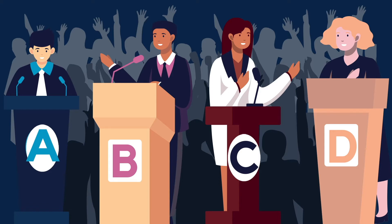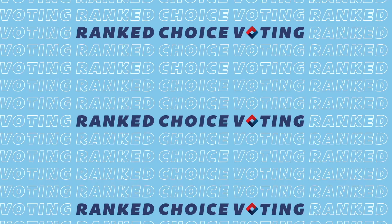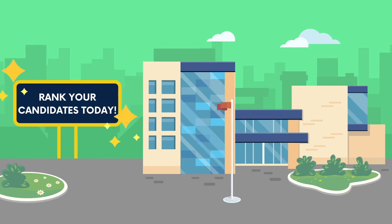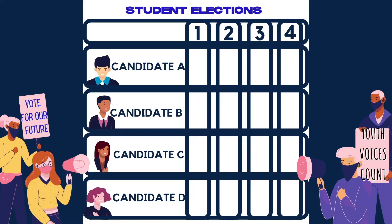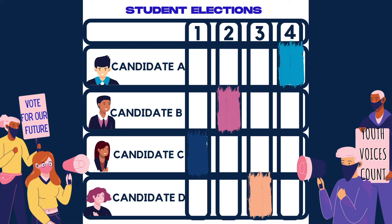All four of them make good points and promises for what you want, and your school is using ranked choice voting to allow you to rank your favorite choices. Let's say you rank them as follows: Cassie being your first choice, Brian being your second choice, Denise being your third choice, and Alex being your fourth choice.